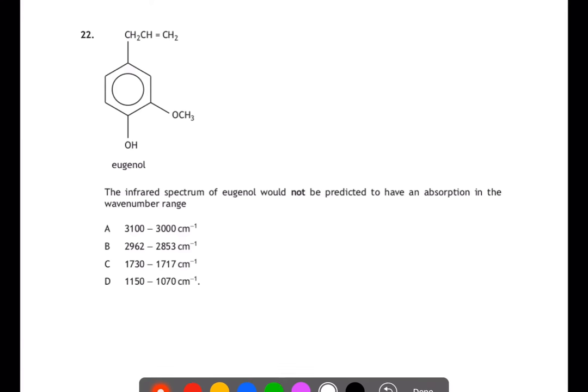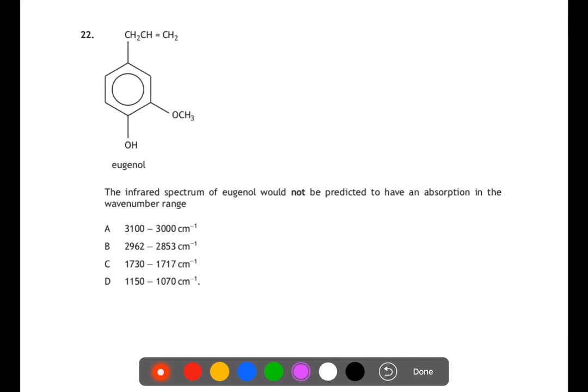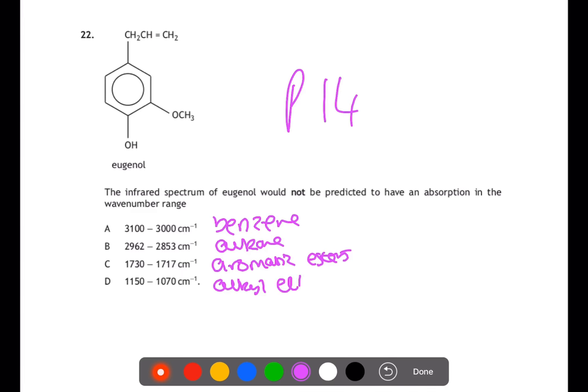Question 22. The infrared spectrum of eugenol would not be predicted to have an absorption in which wave number range? You can use page 14 of your data book to find the different wave number ranges. You'll find that the first one is for benzene. The second is for alkanes. The third is for aromatic esters. And the last one is for an alkyl ether. We have a benzene ring here in the middle of the structure. We have alkane here. We have an alkyl ether here, but we have no aromatic esters. So we will not find C in the absorption spectrum.